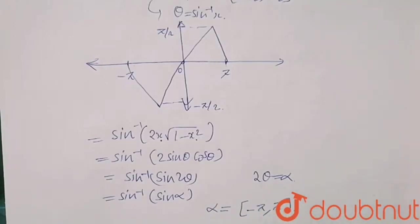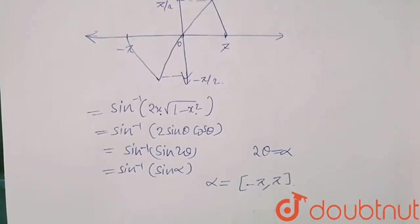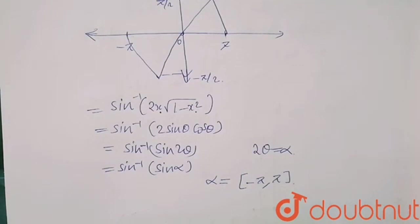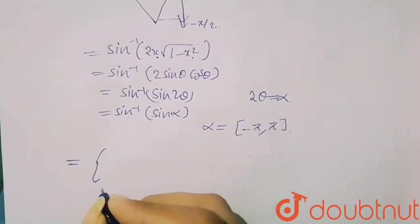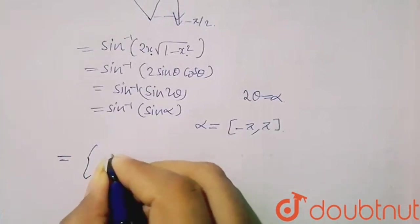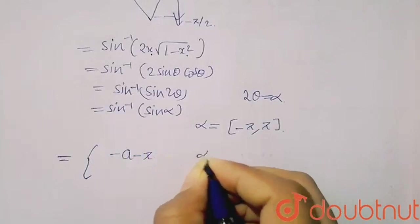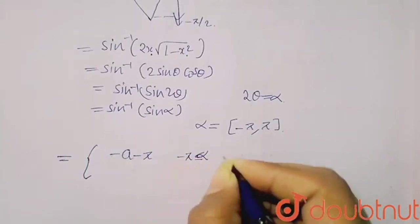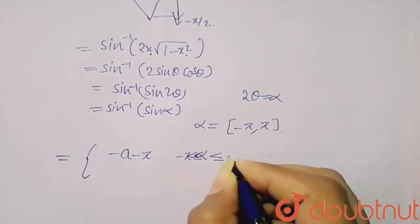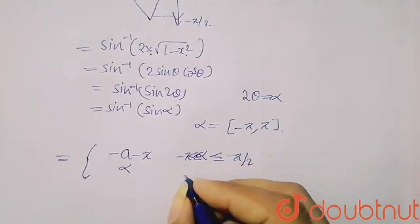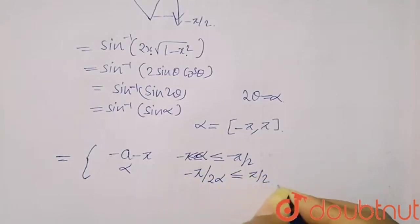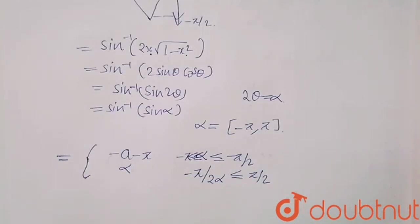To consider the graph of this function, we will check its values to see in which part it is lying. I am seeing here its value is minus pi when alpha lies between minus pi less than equal to minus pi by 2. Here the function value will be alpha when it lies between minus pi by 2 to pi by 2.